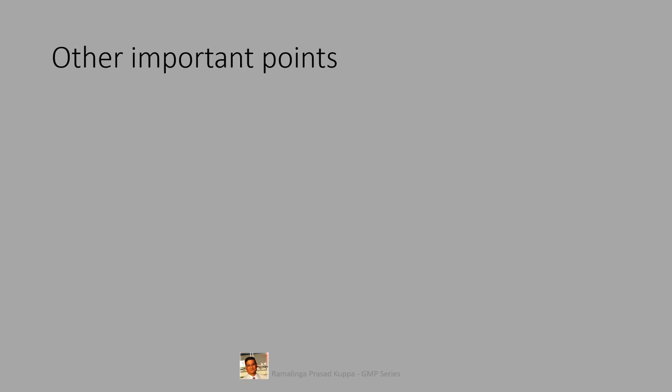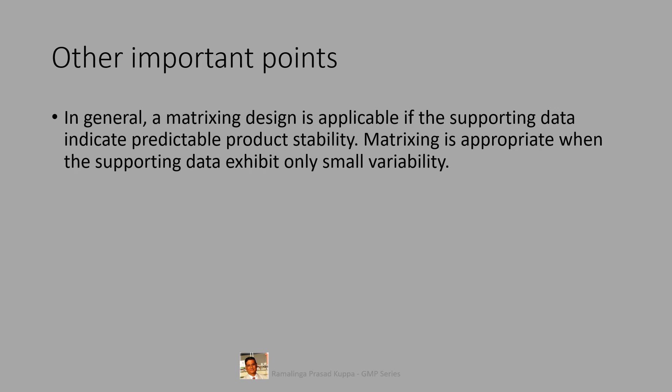Let us see other important points. In general, a matrixing design is applicable if the supporting data indicate predictable product stability. If the supporting data exhibits only small variability. The supporting variability data should indicate the predictable shelf life statistically. If the variability is small, then the bracketing and matrixing design may be applied successfully.